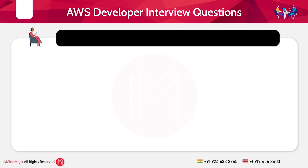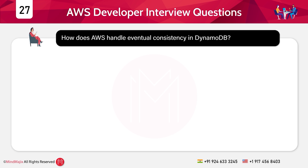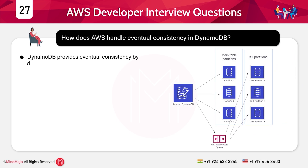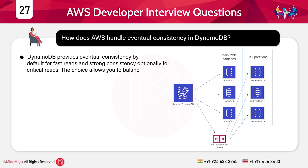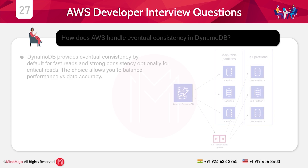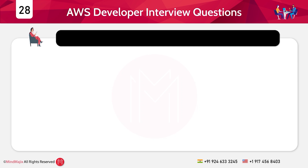Question 27: How does AWS handle eventual consistency in DynamoDB? Answer: DynamoDB provides eventual consistency by default for fast reads, and strong consistency optionally for critical reads. This choice allows you to balance performance versus data accuracy.